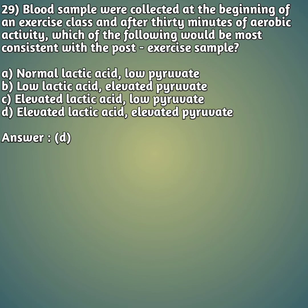Question 29: A blood sample was collected at the beginning of an exercise class and after 30 minutes of aerobic activity. Which would be most consistent with the post-exercise sample? Option A: normal lactic acid, low pyruvate; option B: low lactic acid, elevated pyruvate; option C: elevated lactic acid, low pyruvate; option D: elevated lactic acid and elevated pyruvate. The right answer is option D, elevated lactic acid and elevated pyruvate.